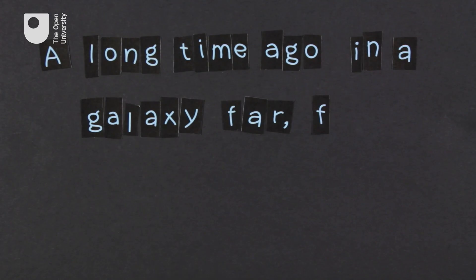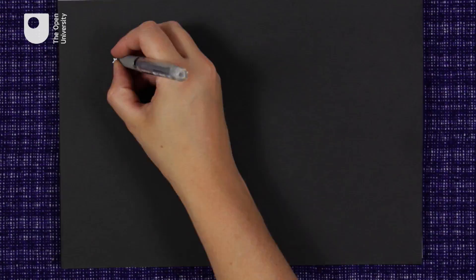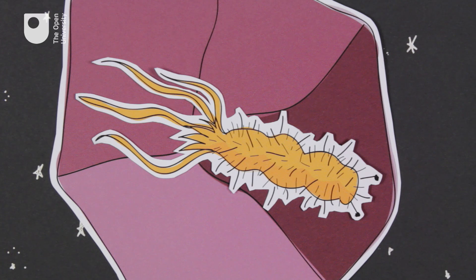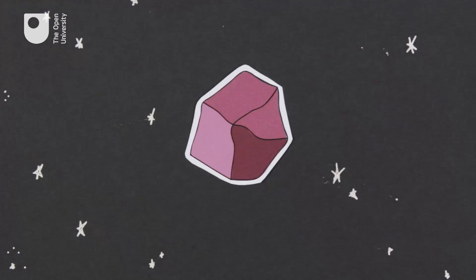What if, a long time ago, in a galaxy far, far away, two life-bearing planets collided? Could an extremophile have piggybacked its way to Earth on the debris? Could these sturdy survivors be the origins of life on our planet?